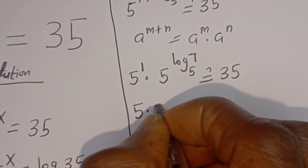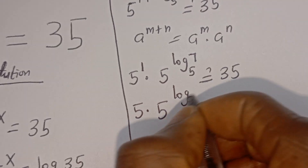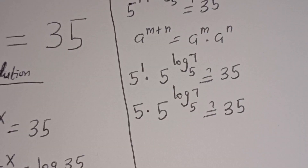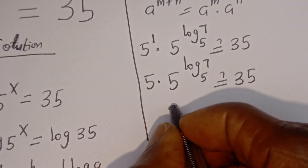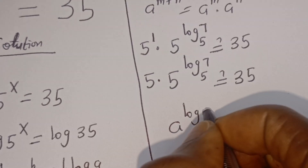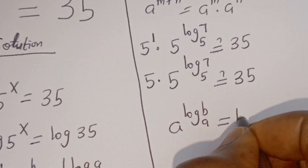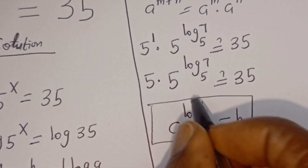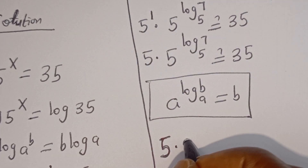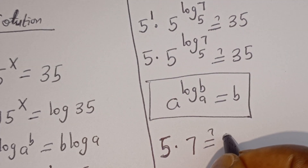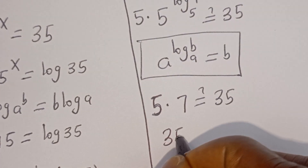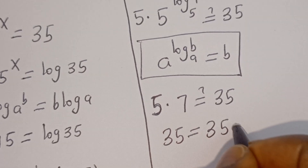This can be written as 5 to the power of 1 multiplied by 5 to the power of log 7 base 5, which must be equal to 35. Now take note that if you have A to the power of log B base A, this is equal to B. So this can be written as 5 multiplied by 7, which must be equal to 35. Then 5 multiplied by 7 is 35, which is equal to 35. This is true.